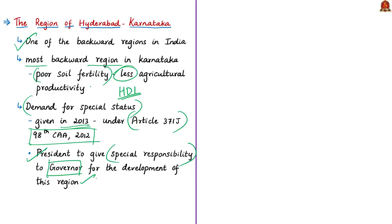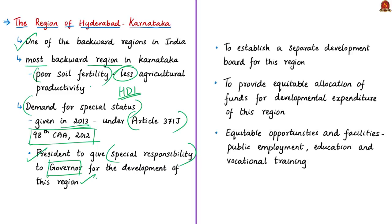Article 371J deals with special provisions with respect to the state of Karnataka. It was inserted into the Constitution by the 98th Constitutional Amendment Act of 2012. This article gives constitutional power to the President of India to give any special responsibility to the Governor of Karnataka for the development of the Hyderabad Karnataka region. Article 371J Clause 1 Sub-clause (a) provides for establishing a separate Development Board for Hyderabad Karnataka region, equitable allocation of funds, and equitable opportunities in public employment, education, and vocational training through reservation.